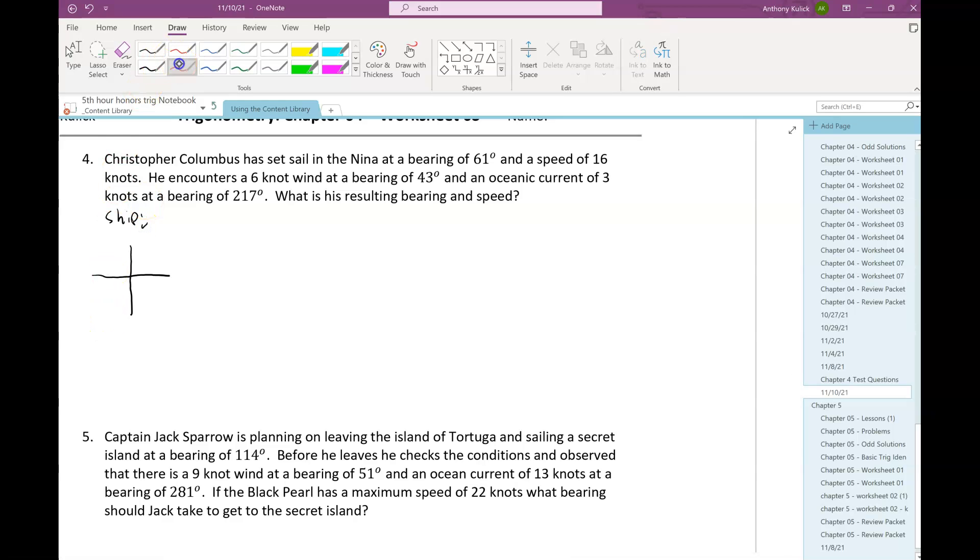So here we're told our bearing is 61. So that means that if that's 61, that part is 29. And our speed is 16 knots. So when I break that into components, the horizontal component is 16 times cosine 29. The vertical component is 16 sine 29.